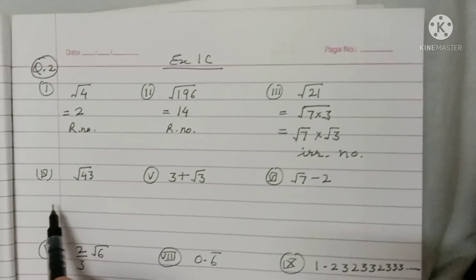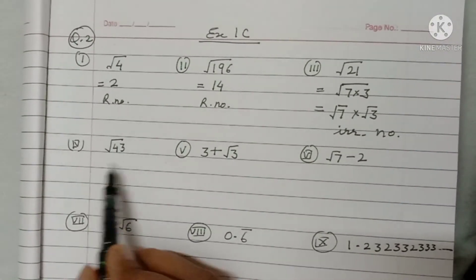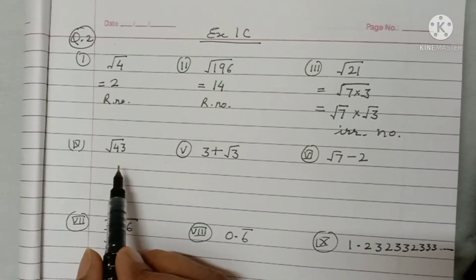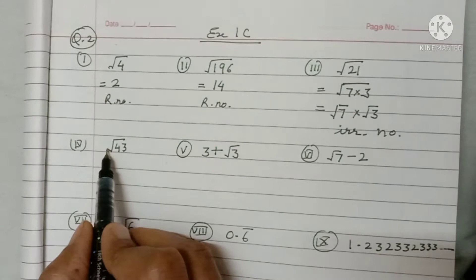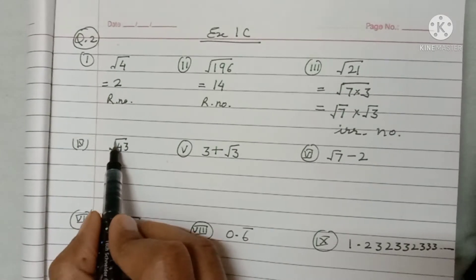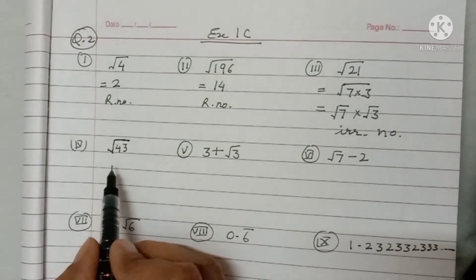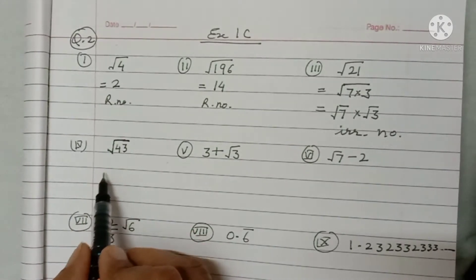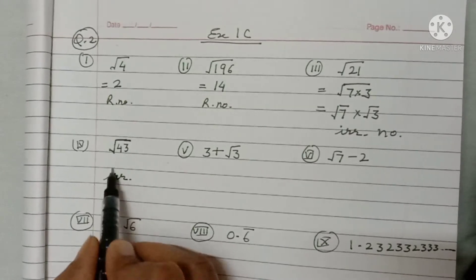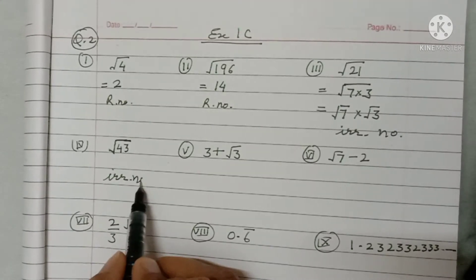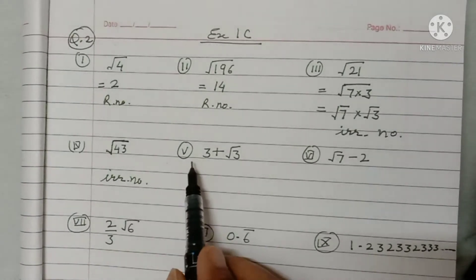The fourth part, √3, is also not a perfect square number, so this is an irrational number.